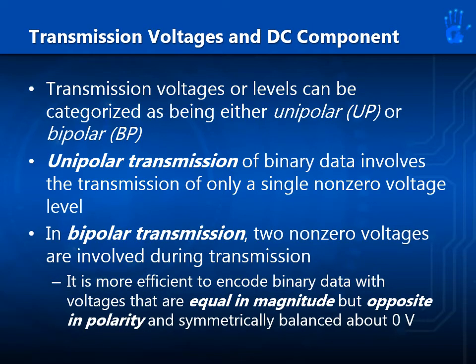Transmission voltages or levels can be categorized as being unipolar or bipolar. Unipolar transmission of binary data involves the transmission of only a single non-zero voltage level. In bipolar transmission, two non-zero voltages are involved. It is more efficient to encode binary data with voltages that are equal in magnitude but opposite in polarity, and symmetrically balanced about zero volts.